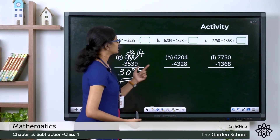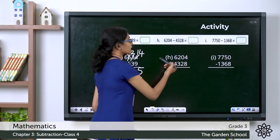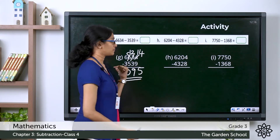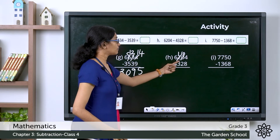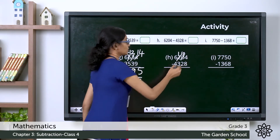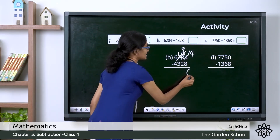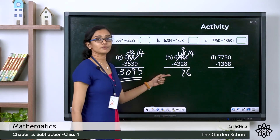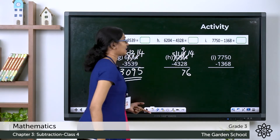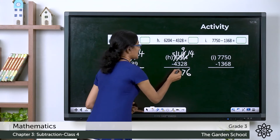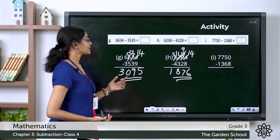Now let's move on to the next question: 6204 minus 4328. 4 minus 8 — we cannot take away 8 from 4. We borrow, but in the tens place we have 0, so we borrow from the next higher place — the hundreds place. We borrow 100 from there, and this 0 tens becomes 10 tens. Now we borrow from this 10 tens and give to the ones place, making it 14 and the tens reduced to 9. 14 minus 8 is 6, and 9 minus 2 is 7. In the hundreds place we have 1 minus 3, so we borrow from thousands — it becomes 5 thousands and 11 hundreds. 11 minus 3 is 8, and in the thousands place 5 minus 4 is 1. The difference is 1876.